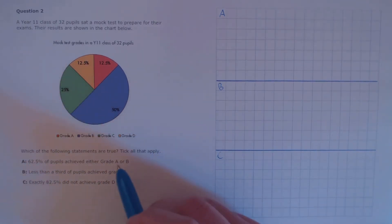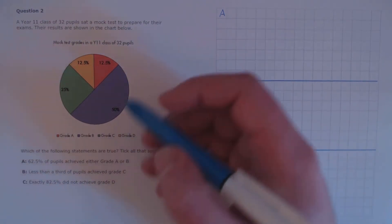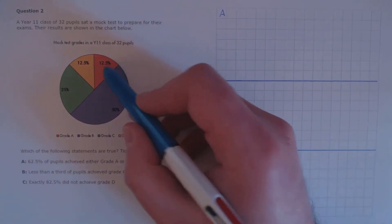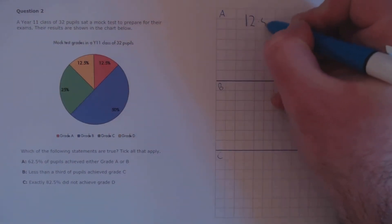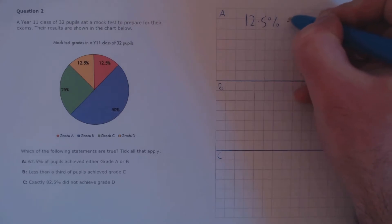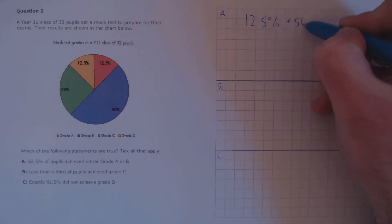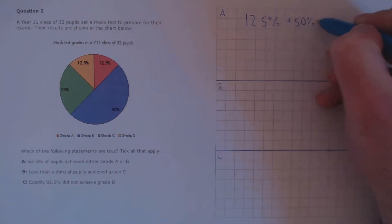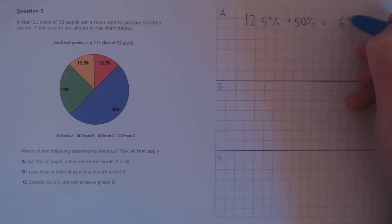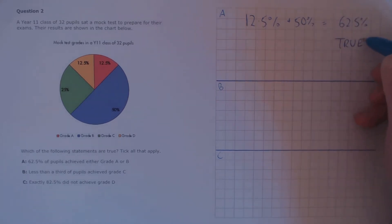To find out, we need to add up the percentage that achieved Grade A, which is 12.5%, and the percentage that achieved Grade B, that's 50%, which equals 62.5%. So that one is true.